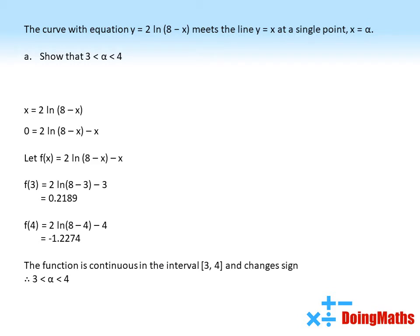Now, our function f(x) is continuous in the interval [3, 4] and it changes sign from a positive number to a negative number in that interval. Therefore, α must lie in the interval 3 < α < 4.